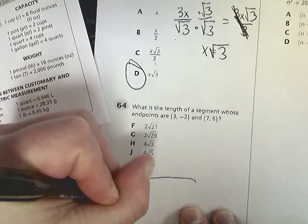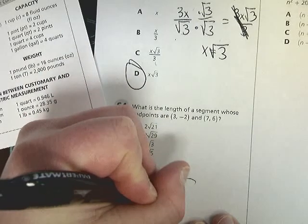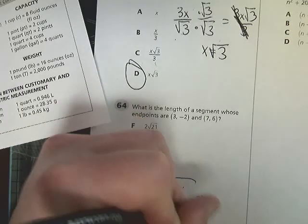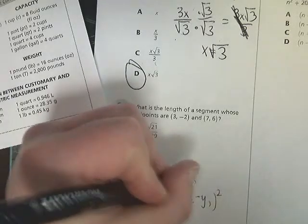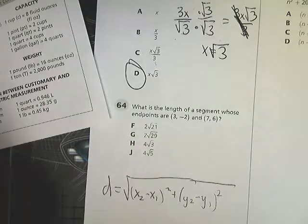Square root of x sub 2 minus x sub 1, which shows you how far the x's are apart. Square root of y sub 2 minus y sub 1 squared. This is just a derivative of the Pythagorean Theorem.